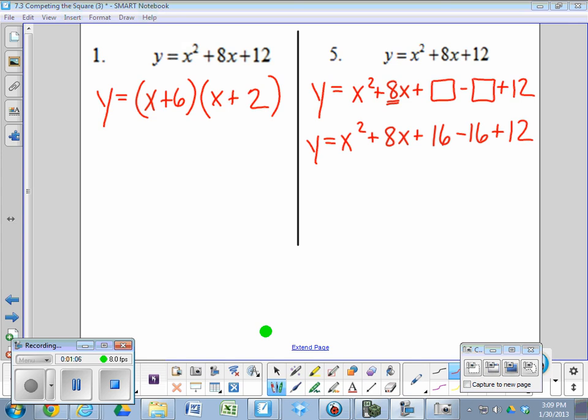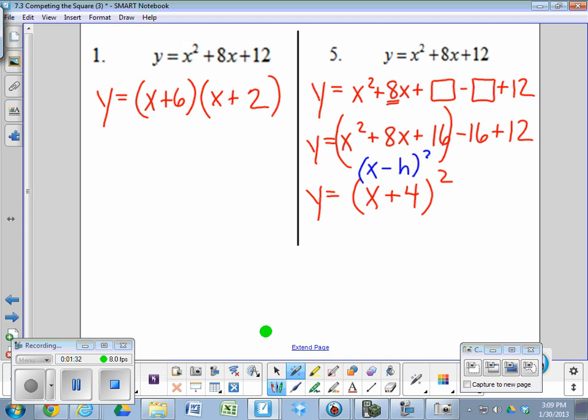So I completed the square by adding 16 and subtracting 16. And what we're going to do next is group it into two parts. That part that I put the parentheses around will be the perfect square. The perfect square comes from taking half of 8, which was 4, and putting it right there in the h position. When I say h, I'm talking about x minus h squared. So we have a 4 in the place of h because 4 squared is 16.